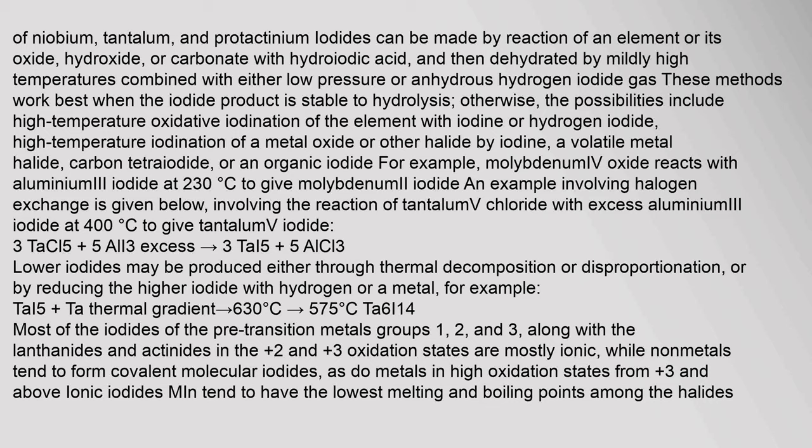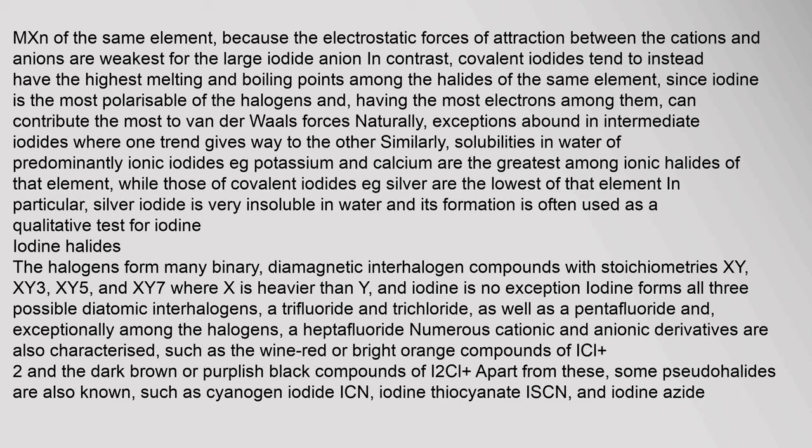Iodides can be made by reaction of an element or its oxide, hydroxide, or carbonate with hydroiodic acid, then dehydrated by mildly high temperatures combined with either low pressure or anhydrous hydrogen iodide gas. Ionic iodides tend to have the lowest melting and boiling points among the halides of the same element. Conversely, covalent iodides tend to have the highest melting and boiling points among halides of the same element, since iodine is the most polarizable of the halogens and contributes the most to van der Waals forces.